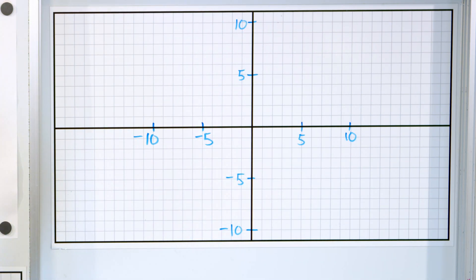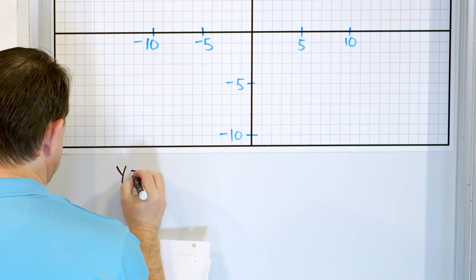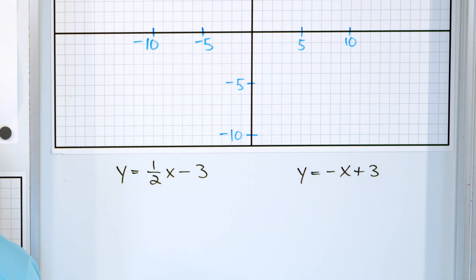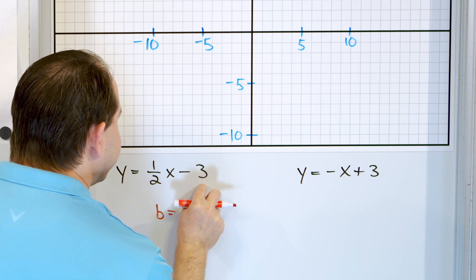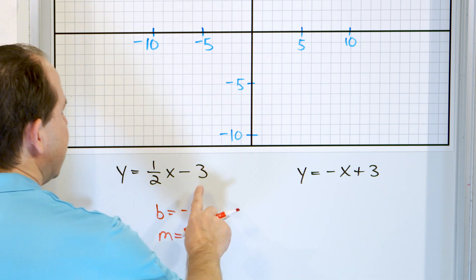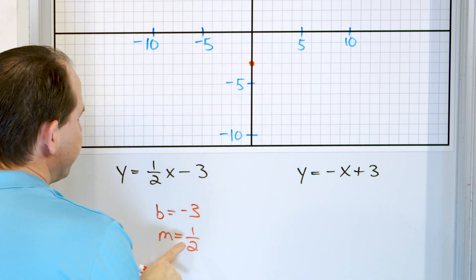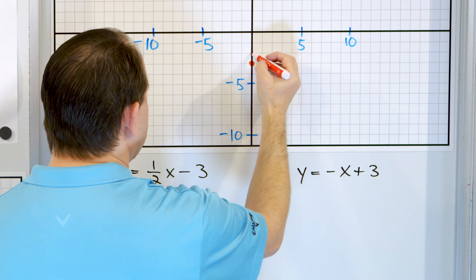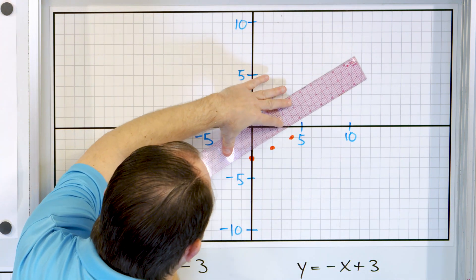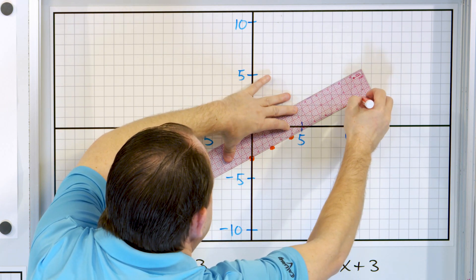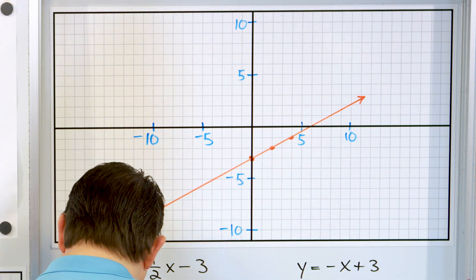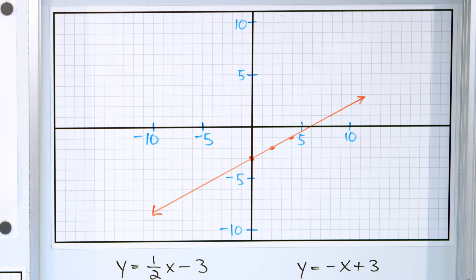Let's take a look at our third problem. The first line is y equals one-half x minus 3, and the second line is y equals negative x plus 3. For the first line, the y-intercept is negative 3 and the slope is one-half — rise over run. The y-intercept is at negative 3, so put a big dot there. Rise 1, run 2 from here: my next dot is here. Up 1, over 2 again: my next dot is here. I'll draw a nice long line through all three points.